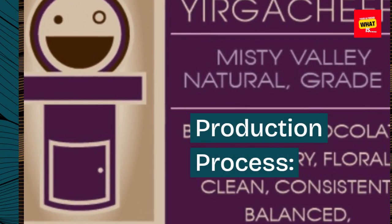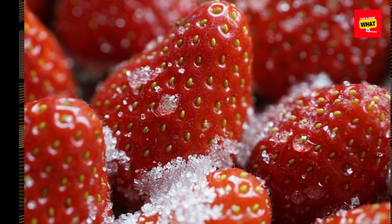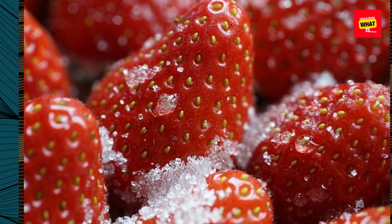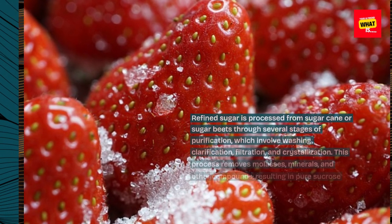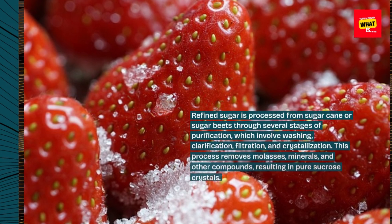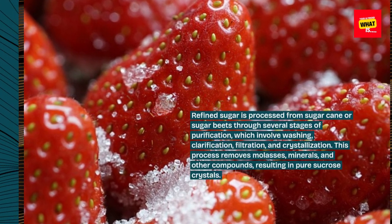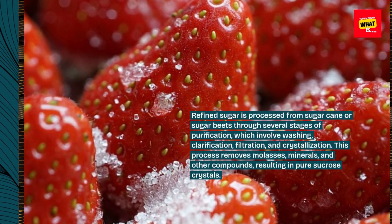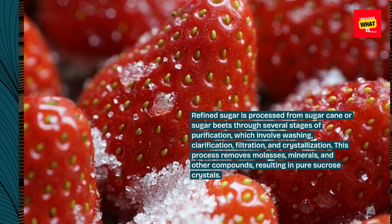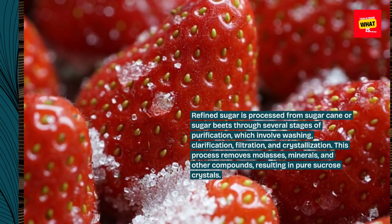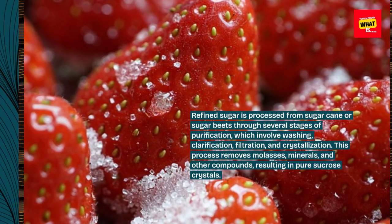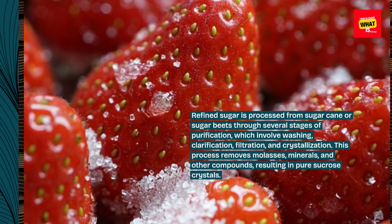Production Process: Refined sugar is processed from sugarcane or sugar beets through several stages of purification, which involve washing, clarification, filtration, and crystallization. This process removes molasses, minerals, and other compounds, resulting in pure sucrose crystals.